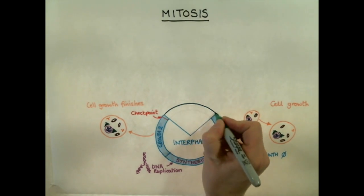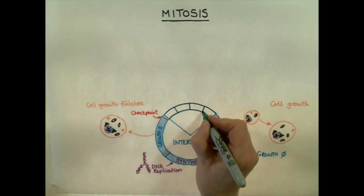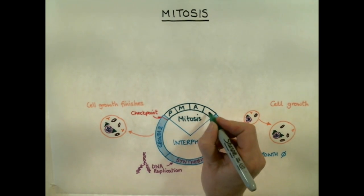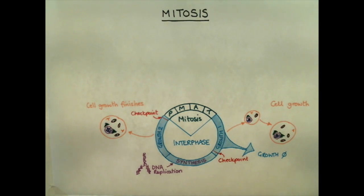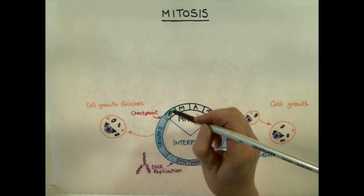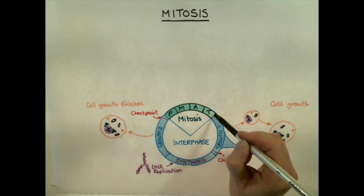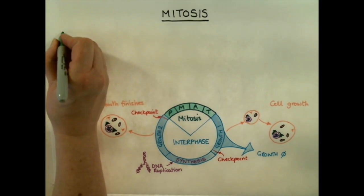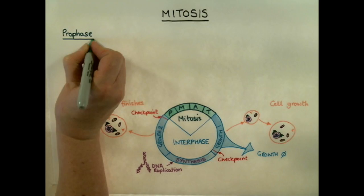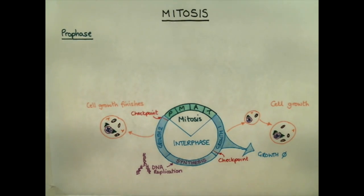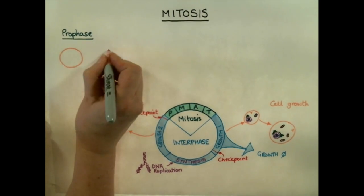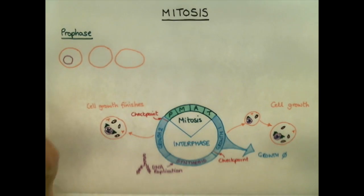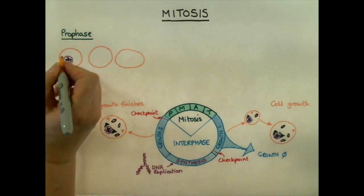Once a cell has passed the second checkpoint, it enters mitosis, during which the nucleus breaks down and the DNA replicated in interphase is split to form the nucleus contents of two new cells. During mitosis, the cell passes through four stages: prophase, metaphase, anaphase, and telophase. The first stage of mitosis is prophase. During early prophase, chromatin — the uncoiled form of DNA — condenses and shortens to become chromosomes. This condensation process stops the DNA strands from becoming entangled with one another as they move during mitosis.